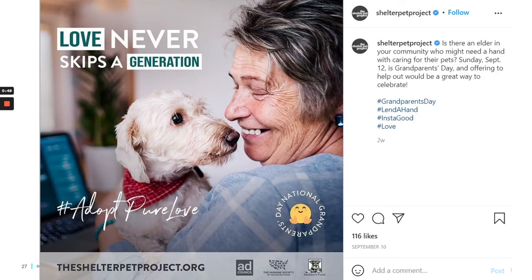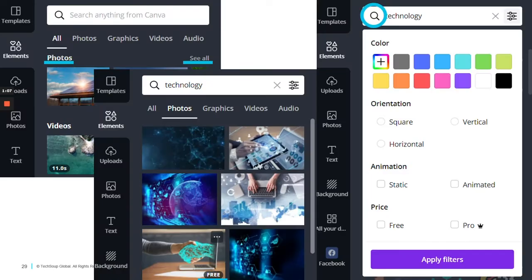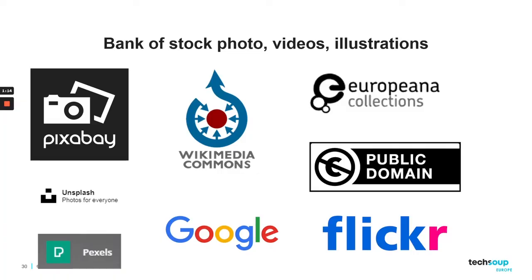The image has to relate to the content. Photos of cats and dogs are cute, but unless you represent an animal shelter or pet store, they are irrelevant. Please remember to make sure you have permission to use the images you choose. Canva in its basic version is limited with free-to-use photos, but you can always check stock banks like Pixabay, Pexels, Wikimedia Commons, Unsplash, Google, Flickr, or Europeana collections. With Canva Pro, you have everything in one place.